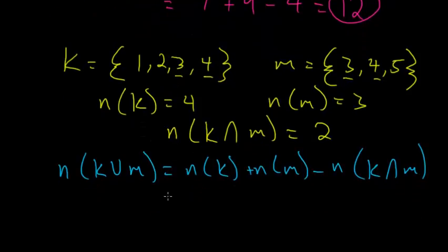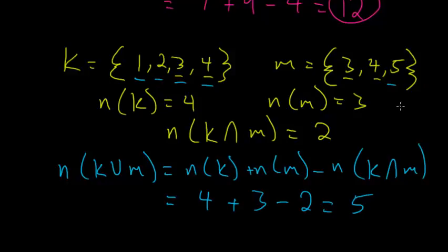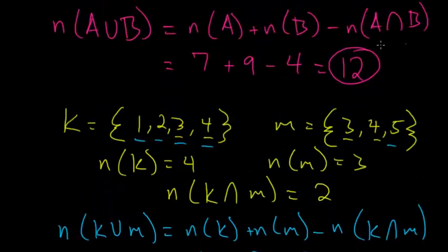So we have 4 plus the number of elements in M is 3 minus the number of elements that each set shares with each other, so that would be 2. Our final answer would be 5. You can see very clearly that 1, 2, 3, 4, and 5 are the total number of unique members in these two sets. We've verified that this formula works, so now we know for sure that our answer is indeed 12.